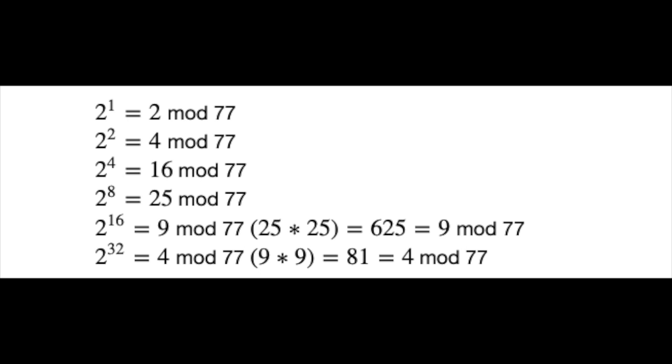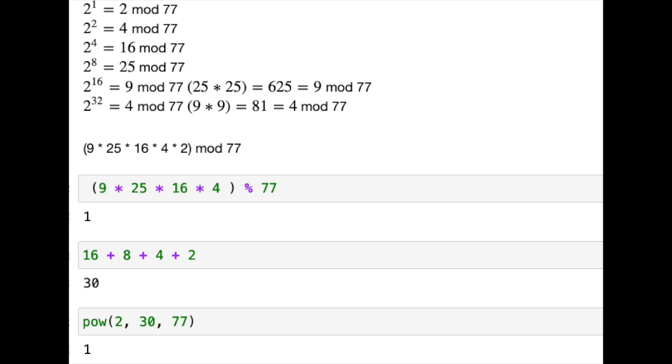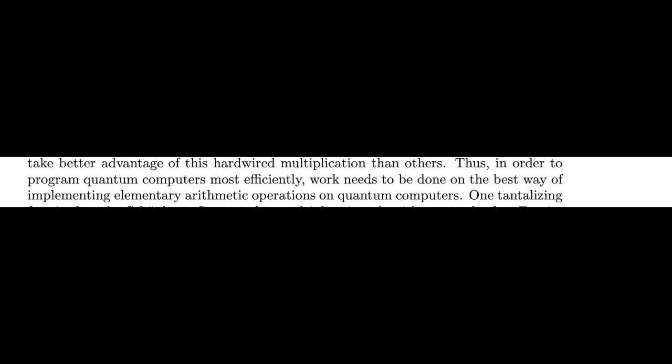For any nilf, the pigeonhole principle guarantees that the period will be less than the nilf. To find the period, you need to find which binary powers, when multiplied together, equal 1. For 77, we have these powers. And that is how Shor's algorithm actually performs what is labeled as modular exponentiation. The quantum computer does not exponentiate anything. All that is done on the classical computer, and the quantum computer just multiplies the numbers together and performs the modular arithmetic. As Shor said, thus, in order to program quantum computers most efficiently, work needs to be done on the best way of implementing elementary arithmetic operations on quantum computers.